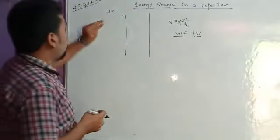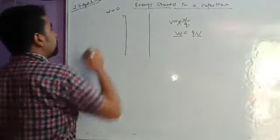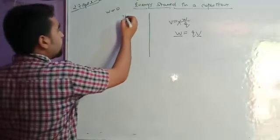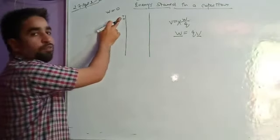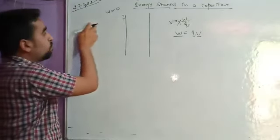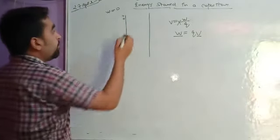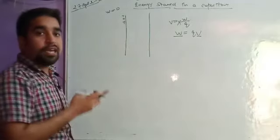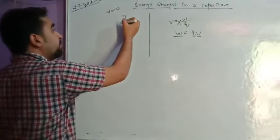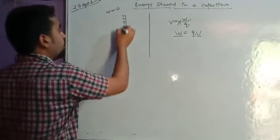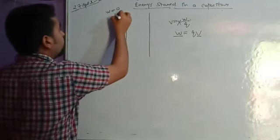When we bring the very first charge, there was no potential present, so the work done was zero. Now when we bring the second charge, we have to do a little work because the positive charge applies a force of repulsion on the next charge. As we accumulate more positive charges, we have to do more and more work — more work for the third charge, even more for the fourth, and so on.